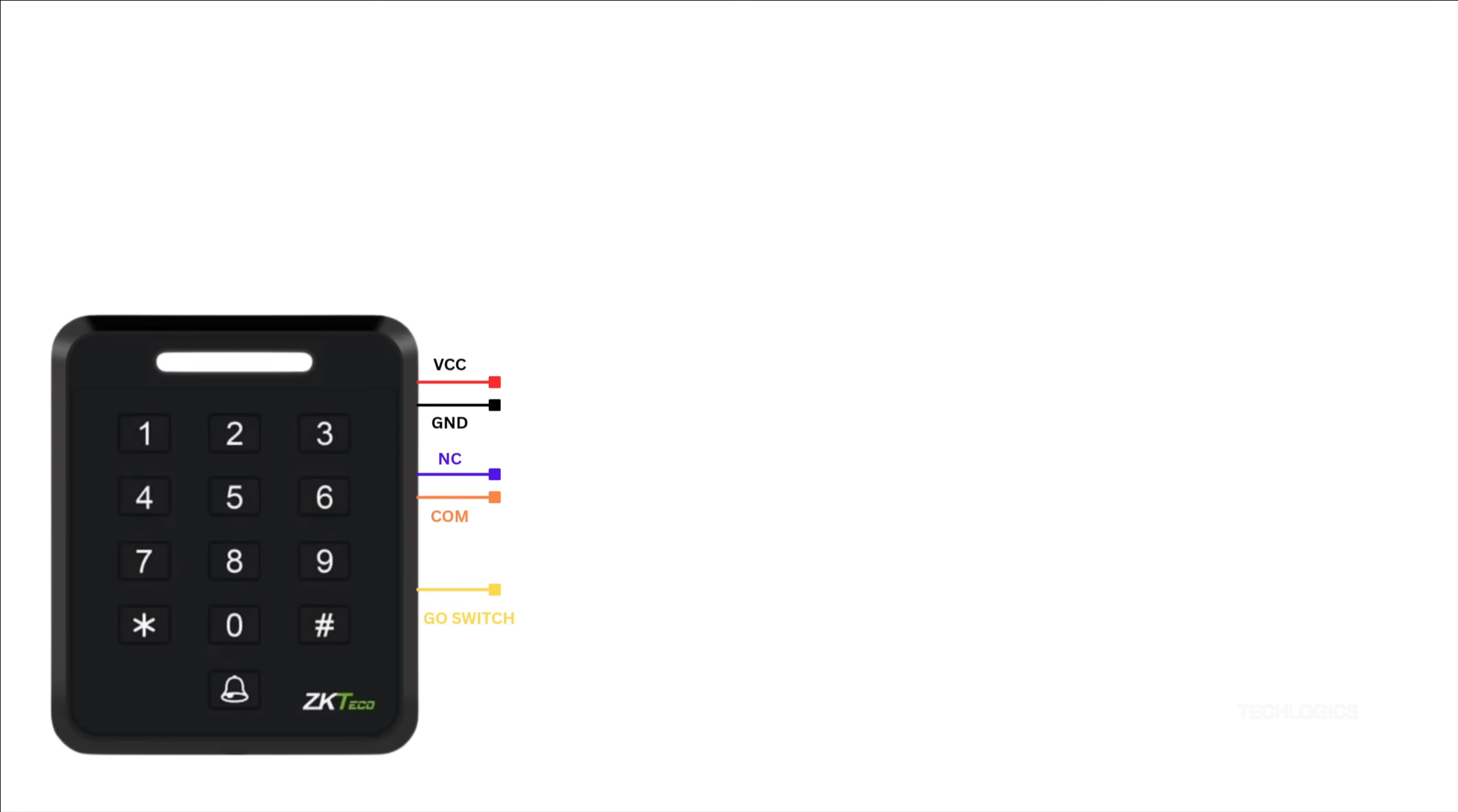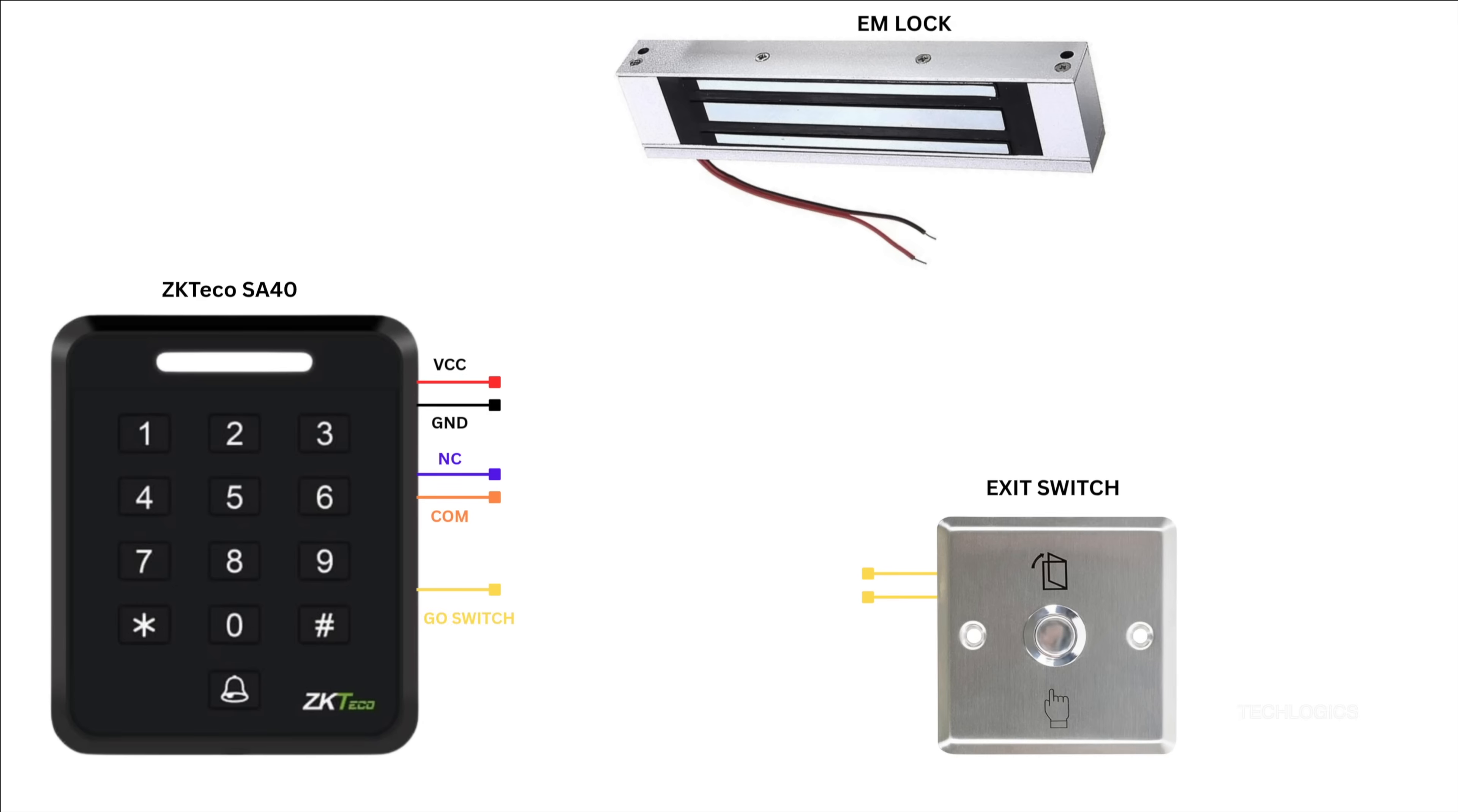To set up the access control system in this tutorial, you'll need the following key components: an electromagnetic lock to secure the door, a ZKTECO SA40 standalone access controller to manage access credentials, an exit switch for easy egress, and a DC 12-volt power supply to ensure the system operates smoothly and efficiently.